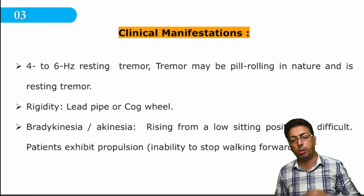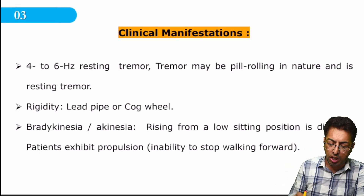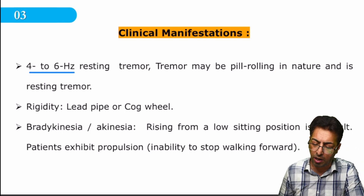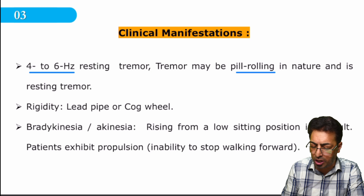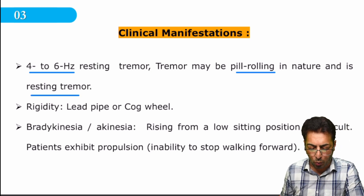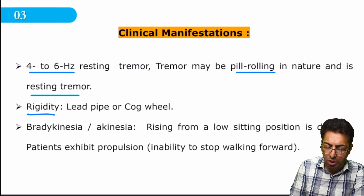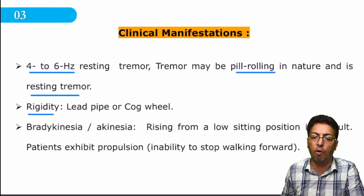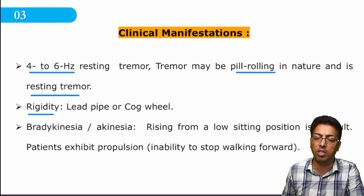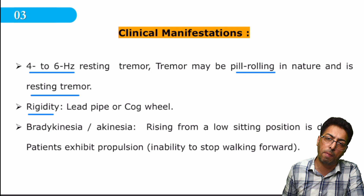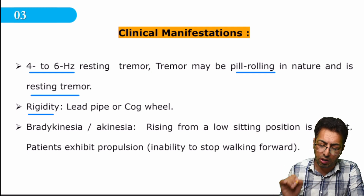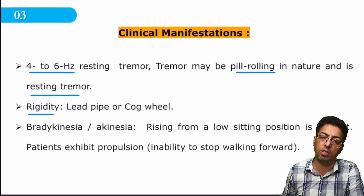The specifics of the tremor: it is a four to six hertz tremor, may be pill-rolling in nature, and it is a resting tremor as mentioned — not action tremor. Regarding rigidity, it can be either lead pipe or cogwheel type — there is a difference in the resistance pattern to movement, and both types can be present in Parkinson's disease.